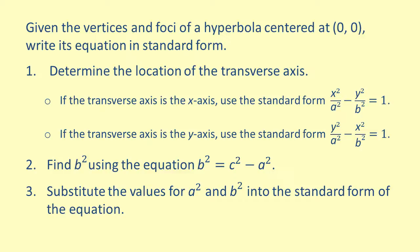In most cases, we will be given the vertices and the foci of a hyperbola. Our first step is always to determine which axis is the transverse axis. To do this, we look at the coordinates of the vertices and the foci. If we are given coordinates with the form plus or minus a comma 0 for the vertices and plus or minus c comma 0 for the foci — in other words, if the given points are x-intercepts — then the transverse axis is the x-axis.